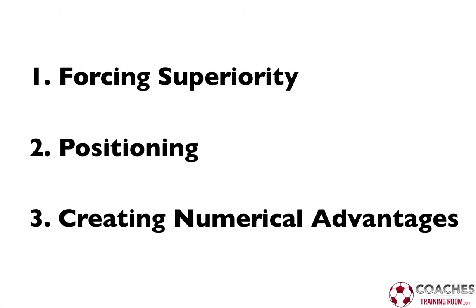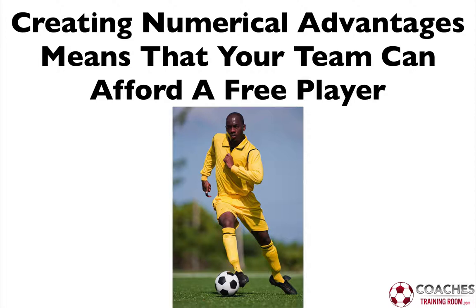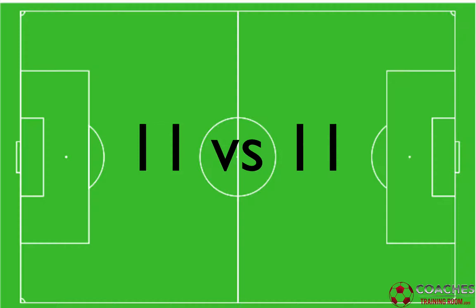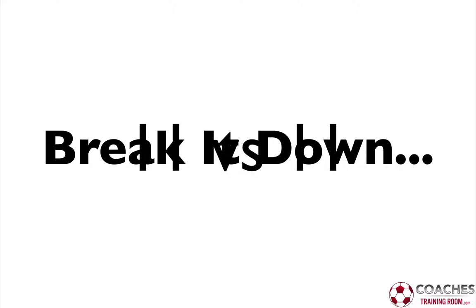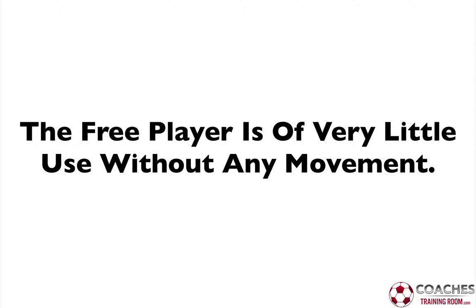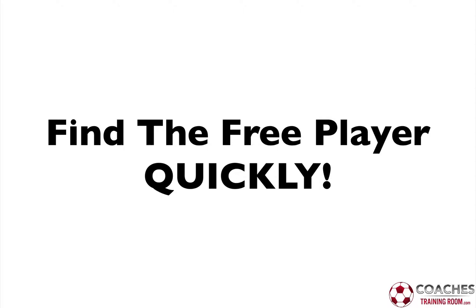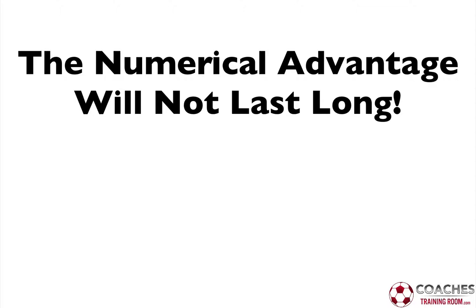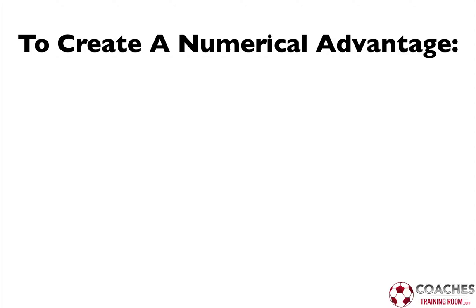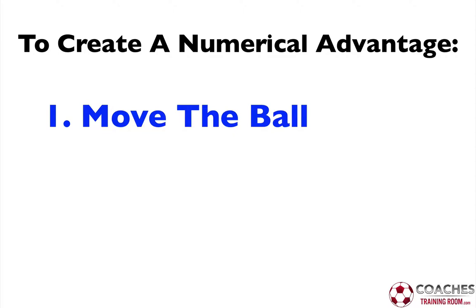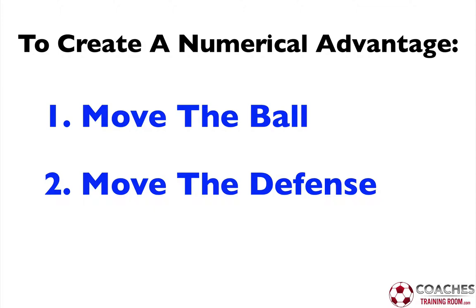With that point in mind, a couple of key points to think about. Creating numerical advantages means that your team can afford a free player. Now in an 11 versus 11 situation, you can't create a numerical advantage when you think about it in terms of the whole field, so you have to break it down into smaller points. The free player in any one area of the field is of very little use to you without any movement. So if you've created the numerical advantage, what you then need to do is exploit that situation. Your job is to find the free player quickly, because the numerical advantage will not last for very long at all — the other team are going to be able to realize what's happened and shift their position accordingly. You can either move the ball, which will give yourselves time to maneuver players or take advantage of a key area on the field. Moving the defense is the second point — you can move the defense by making off-the-ball runs so other players can run for you. If they make a run across a defender, the defender is going to have to drag their position out, which is going to create space.